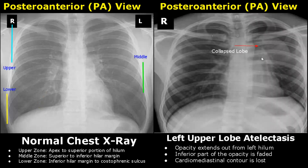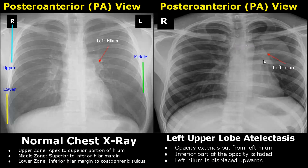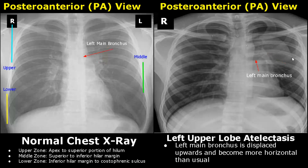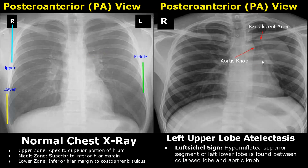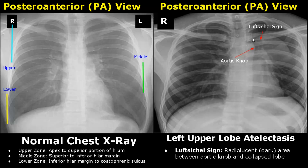In left upper lobe atelectasis, the left upper lobe is collapsed. The opacity — this bright region — extends from the left hilum, with a faded inferior part and no well-defined border; the cardiomediastinal contour is lost. The left hilum and the left main bronchus may be displaced upwards, becoming more horizontal than usual. The superior segment of the left lower lobe is hyperinflated and appears as a dark radiolucent area between the collapsed lobe and the aortic knob — this sign is called the Luftsickel sign.